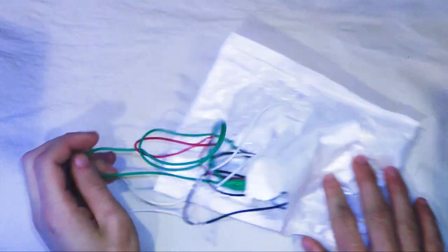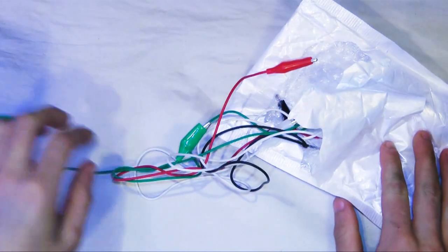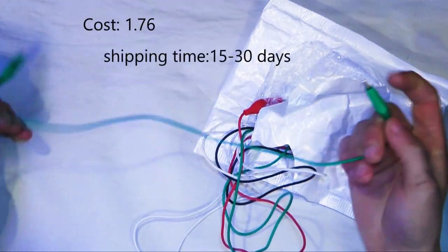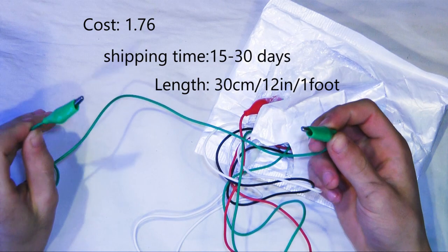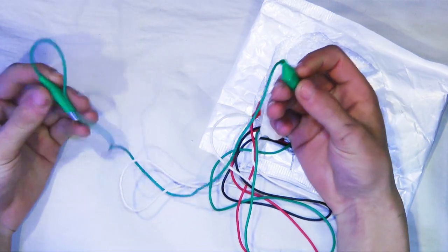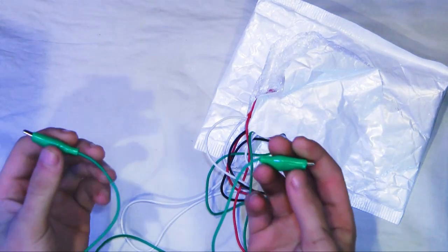So here I have the cheapest alligator clips you can possibly buy on eBay. These things cost $1.70 for 10 of them. That means they're only 17 cents apiece. That's cheap as hell.